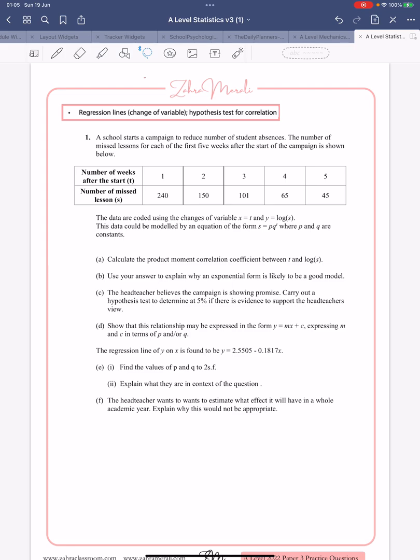The data is coded, we've got x equals t and y equals log s. So if you think about it, that graph that's being plotted is a graph of, on the x-axis you've got t and on the y-axis you've got log s. You want to calculate the product moment correlation coefficient between t and log s. Now you're not given log s, you're given just s, so in your calculator you have to make sure you type in one, two, three, four, five into the x column and log 240, log 150, log 101...